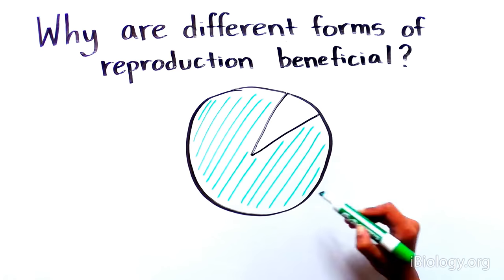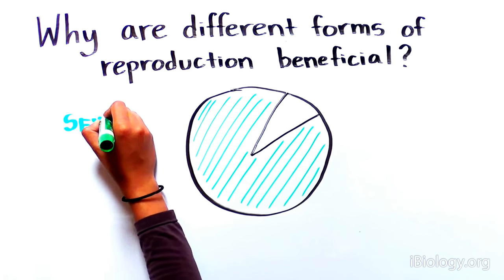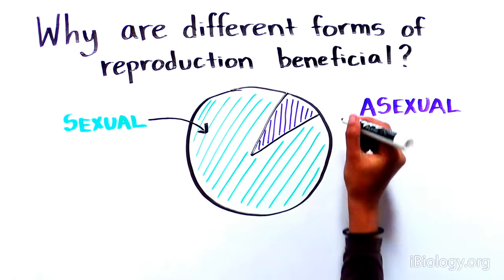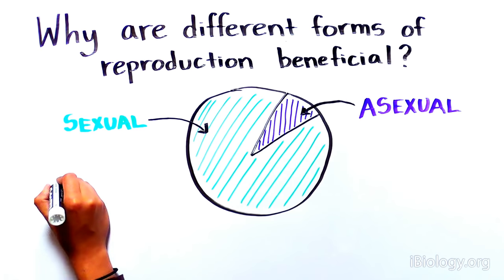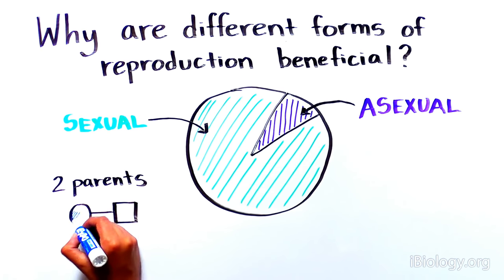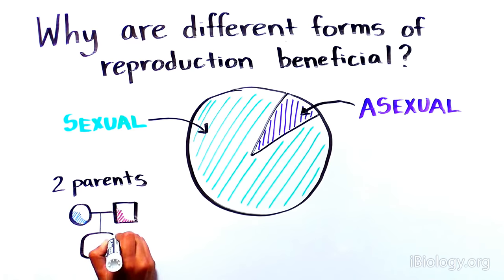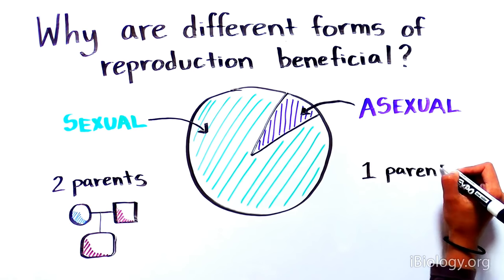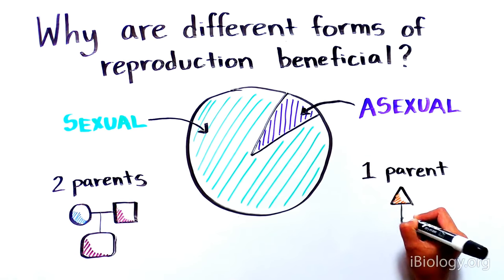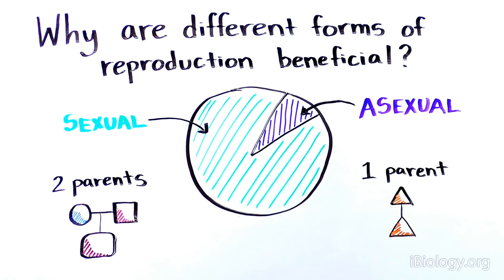Although most species on the planet reproduce sexually, why do some species still reproduce asexually? Why is it evolutionarily beneficial for some species to require two parents to produce offspring and others only one? Let's explore why different forms of reproduction exist and what makes each one beneficial in specific circumstances.